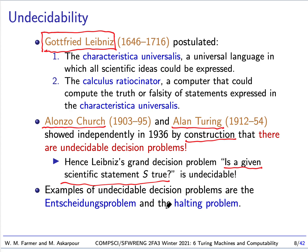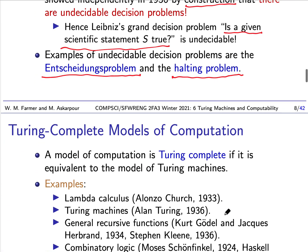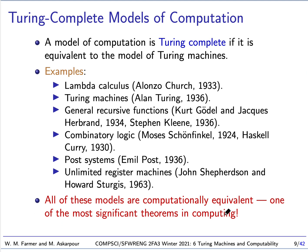Examples of undecidable decision problems include the Entscheidungsproblem — the problem of determining whether a statement in first-order logic or some other logic is valid or not — which Church showed was undecidable. Another problem is the halting problem: given a programming language, can you determine whether a given program halts on a given input? Alan Turing showed that the halting problem is not decidable for a particular model of computation.